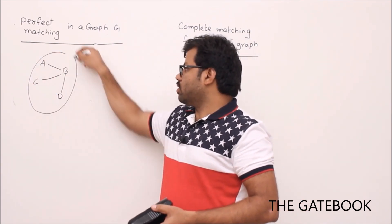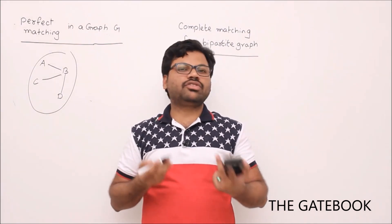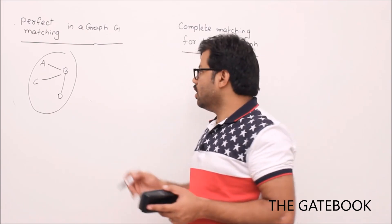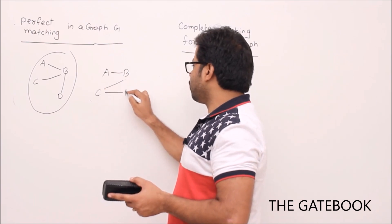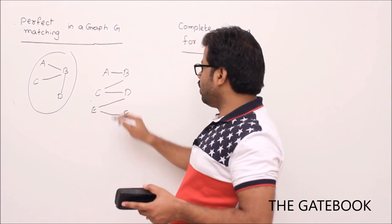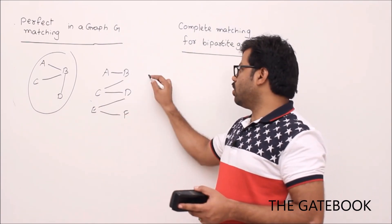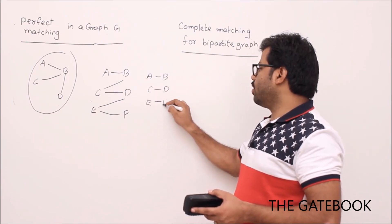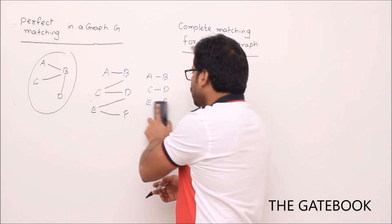So sometimes a graph may not have a perfect matching, and sometimes it will. For example, consider this next graph — it does have a perfect matching: a-b, c-d, e-f. That is the concept of perfect matching.